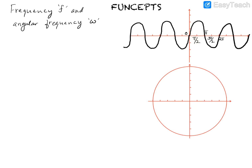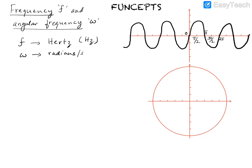Hello and welcome to a new episode of Fun Steps. In this video we will discuss the relationship between the frequency f, which is measured in Hertz, and the angular frequency Omega, which is measured in radians per second. The frequency f has units Hertz, abbreviated as Hz, and the angular frequency Omega has units of radians per second.